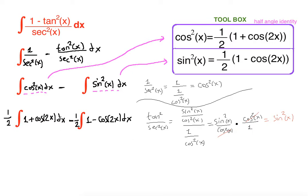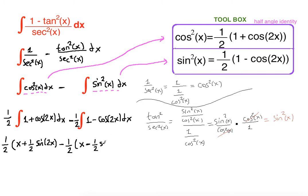Now we can finalize our integration because we know the antiderivatives of each piece. One-half times: the antiderivative of 1 with respect to x is x, plus the antiderivative of cosine of 2x is one-half sine of 2x. Minus one-half times: the antiderivative of 1 is x, and the antiderivative of cosine of 2x is one-half sine of 2x, plus C.